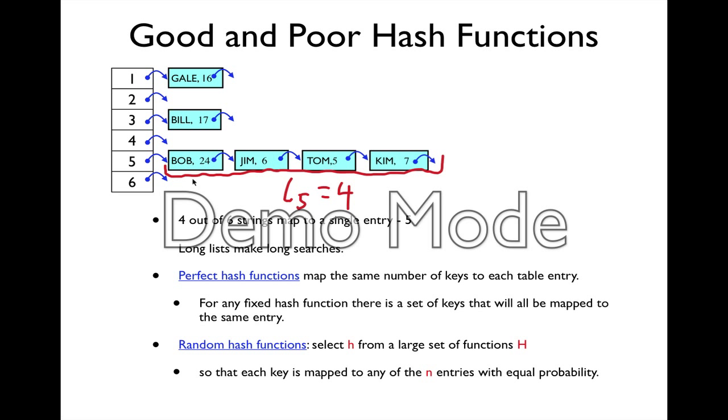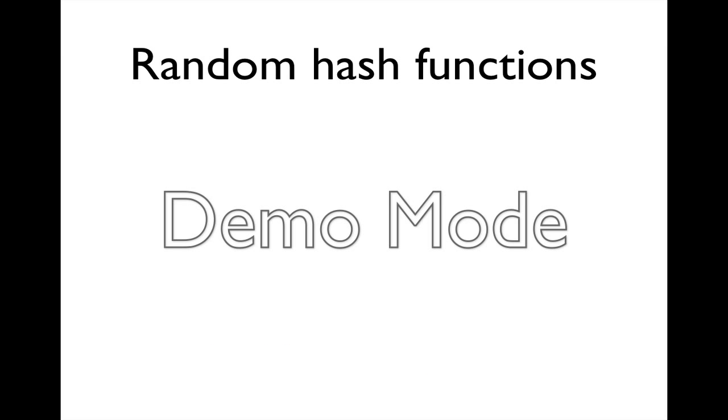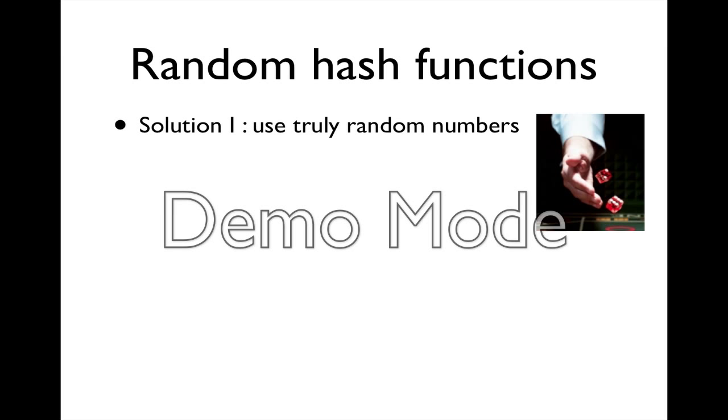We're not going to use perfect hash functions but we're going to use random hash functions. Those are functions such that each key is mapped to a random number between one and six. We can think about it as tossing a random die and getting a number between one and six, but that is a problem because how would we recall the location of the key when we get the same key a second time?